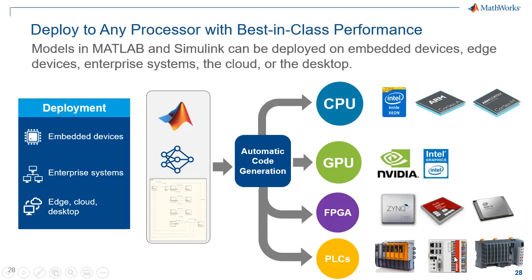Thanks to automatic code generation, we can deploy to any processor with best-in-class performance. Models can generate structured text for PLC or industrial computer, can generate HDL code for FPGA, can generate CUDA code for GPUs or embedded GPUs, can as well generate C code or C++ for embedded processor or computer processors such as Intel or AMD.